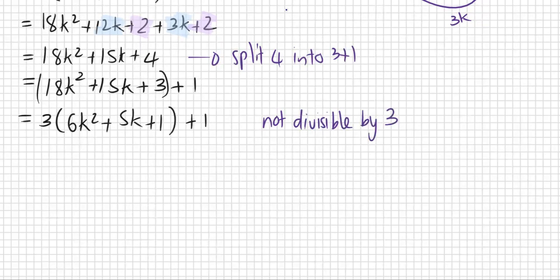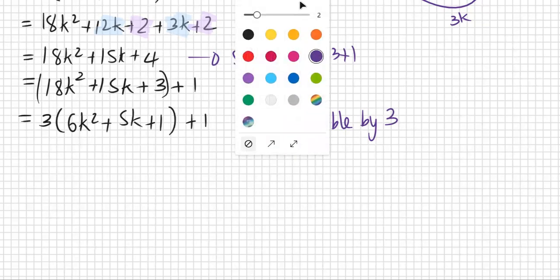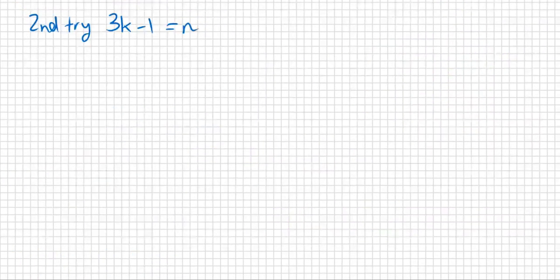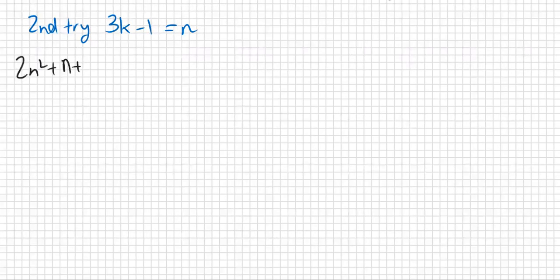We'll try one more thing. We're going to do 3k - 1. So our second try: let 3k - 1 equal n. We start off with 2n² + n + 1, and we sub in 3k - 1. So I'm minusing 1 from the answer. We have 2(3k - 1)² + (3k - 1) + 1.